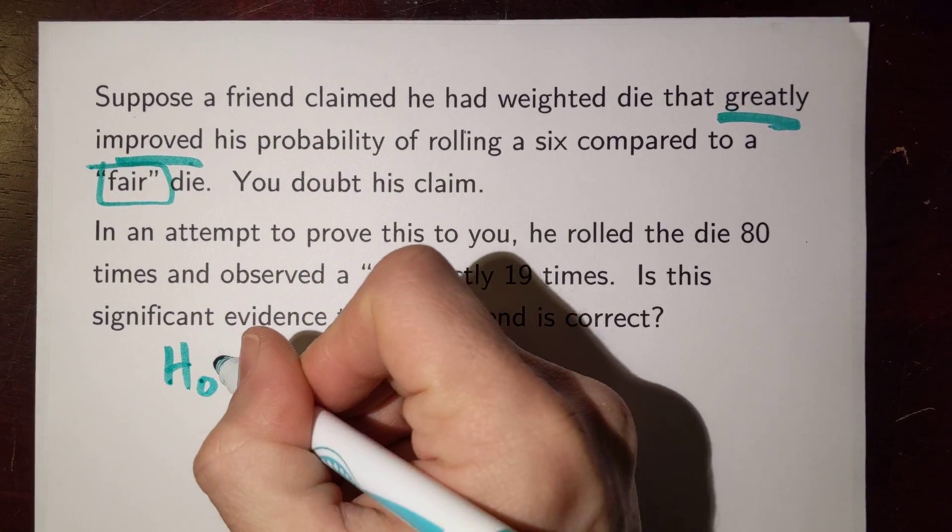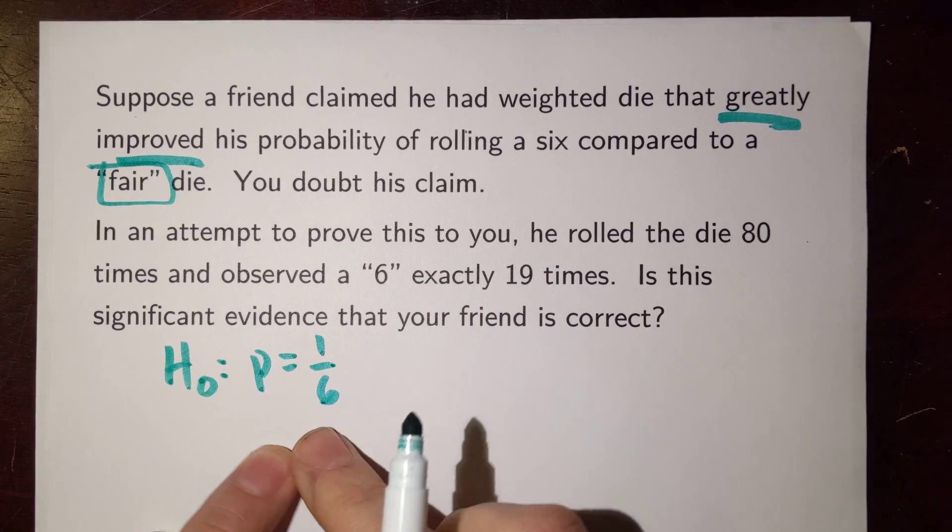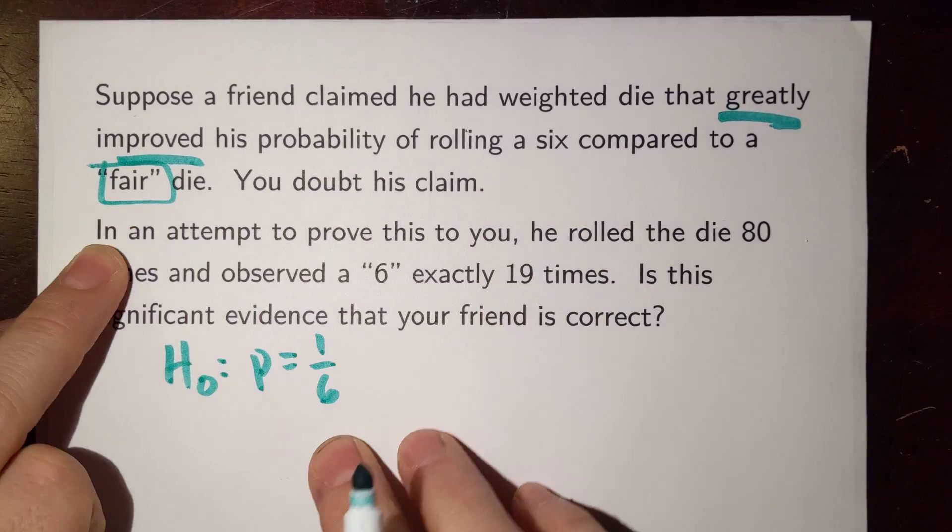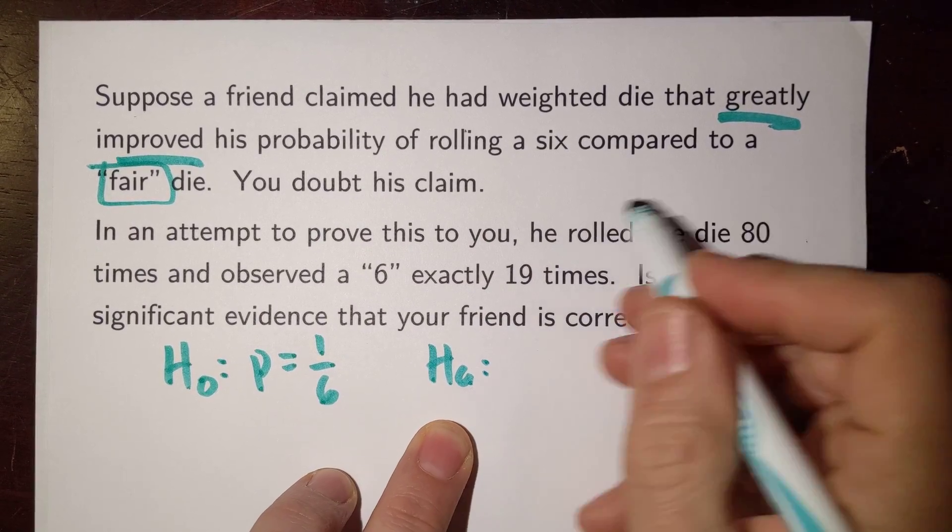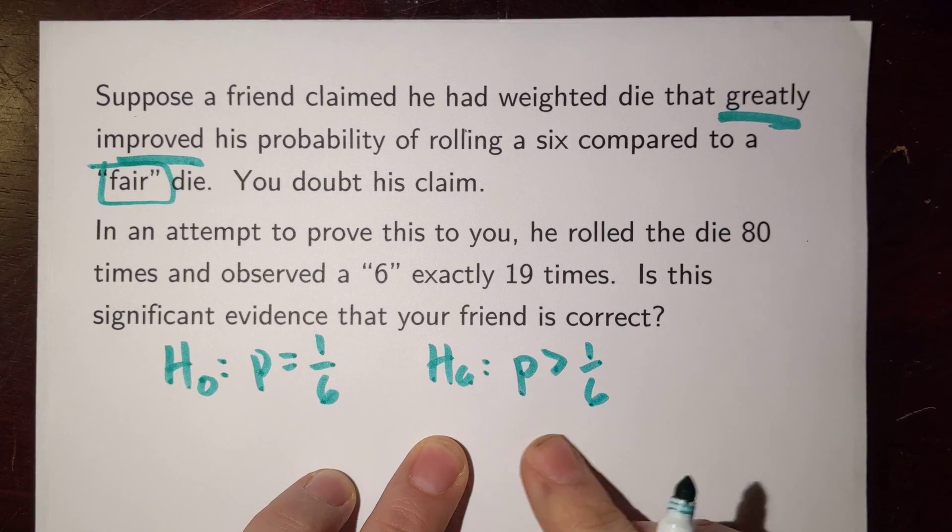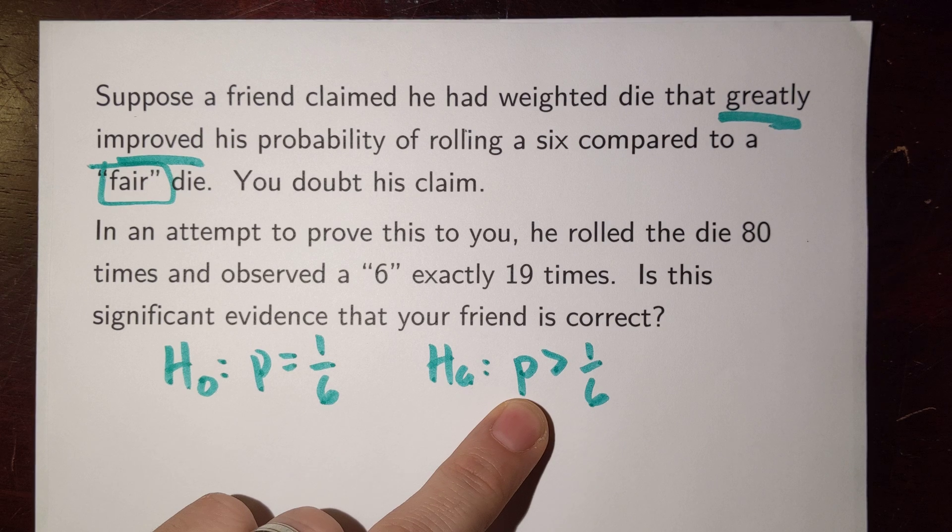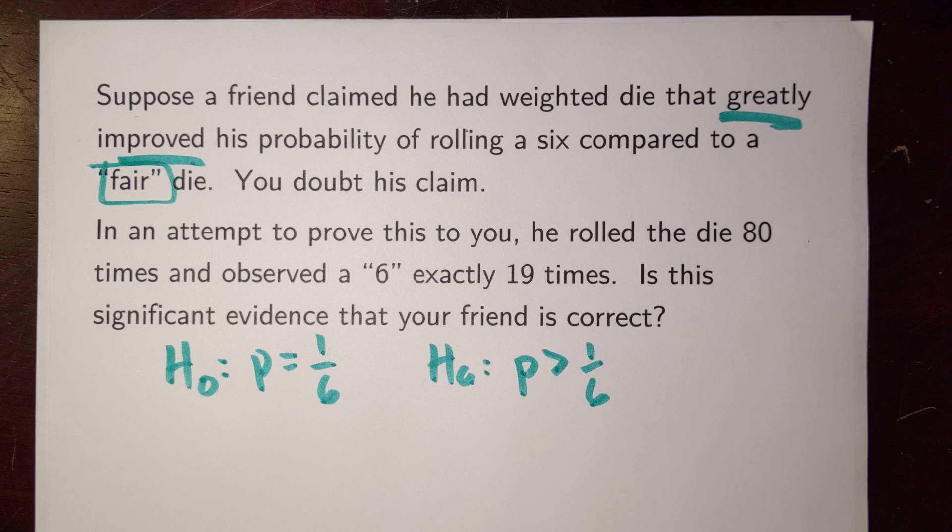So we made a null hypothesis, an assumption that this die should be just the same as any other die, and therefore its probability of rolling a 6 just like any other should be 1/6. However, your friend thinks he's got this fancy die where it's greatly improved. And for us we're not going to even require that much. We're just going to say, do we even have evidence that your friend can roll a die with the probability being greater than 1/6?